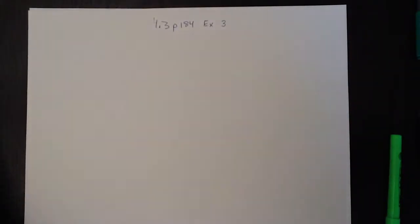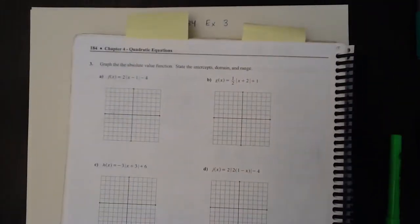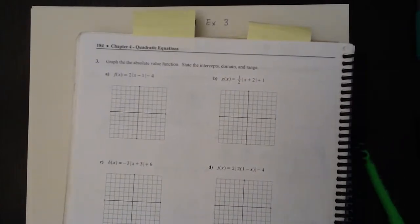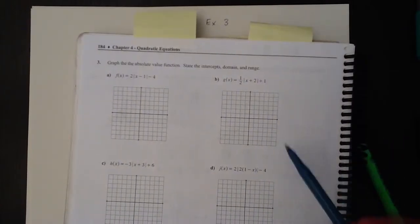Exercise 3 and 4.3 asks you to graph the absolute value function, state the intercepts, domain, and range.